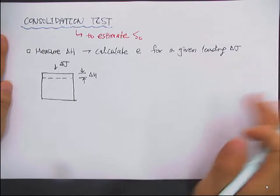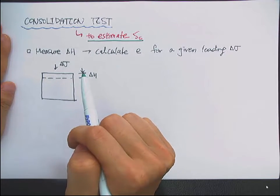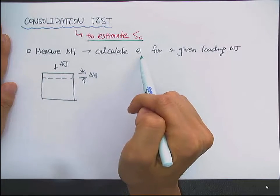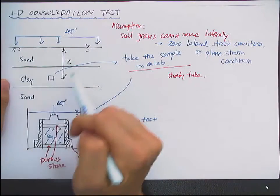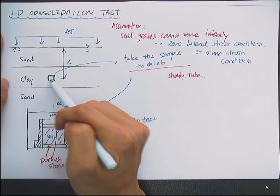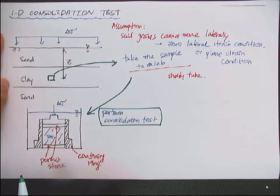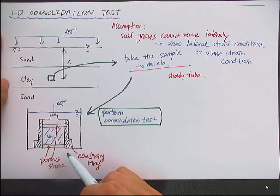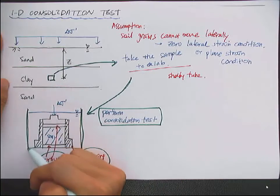We perform a consolidation test to estimate the consolidation settlement. The purpose of this consolidation test is to calculate the void ratio change for a given loading delta sigma. The procedure is as follows: this is the site that you are interested in, where we want to build some structure. We take the sample from the clay layer, take it to the lab, and perform the consolidation test. The consolidation cell consists of several parts, including the confining ring, the porous stone, and the water bath.